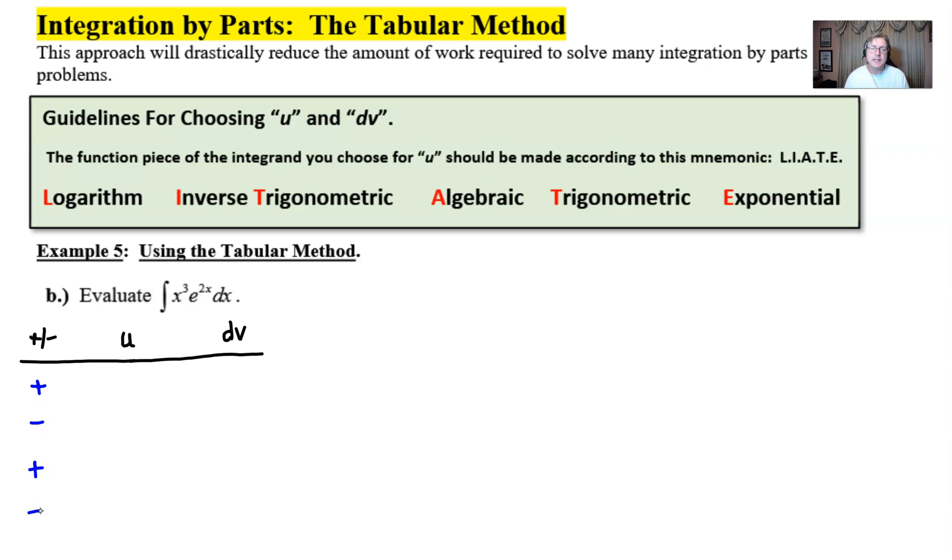You must begin with the plus no matter the situation. For your u column it's mandatory that you choose the x cubed in this particular case. You always have to choose the algebraic piece. After all you're still following LIATE in order to come up with your u. It's just that you're integrating in a table now.